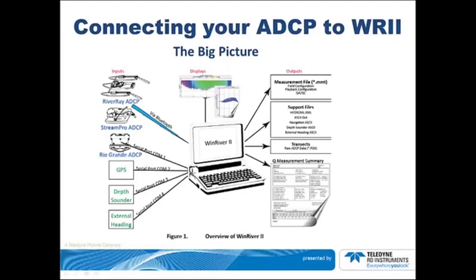On the top left-hand corner of the screen is a RiverRay. Next down is a StreamPro. The StreamPro is used in shallow water up to 6 meters deep. Both of these use a Bluetooth connection as the mechanism to transfer data in real time to the laptop running Wind River 2. The RiverRay can also have a serial connection.